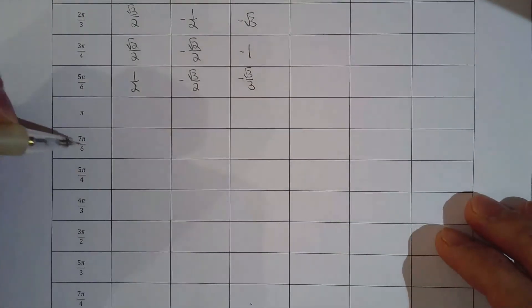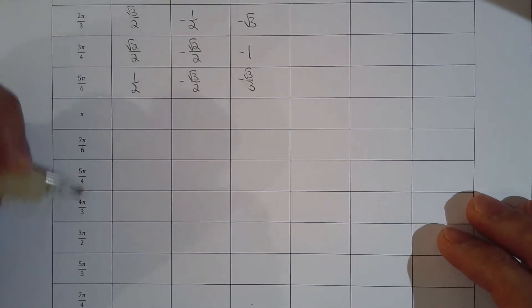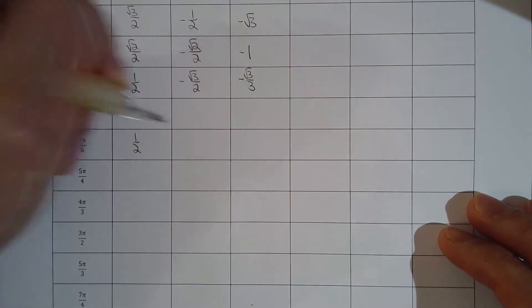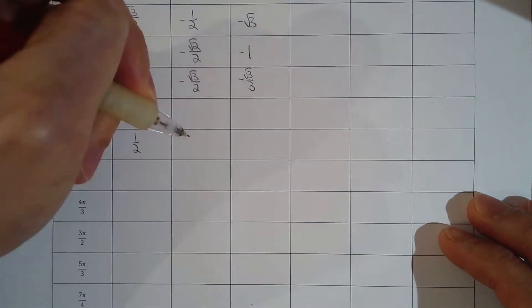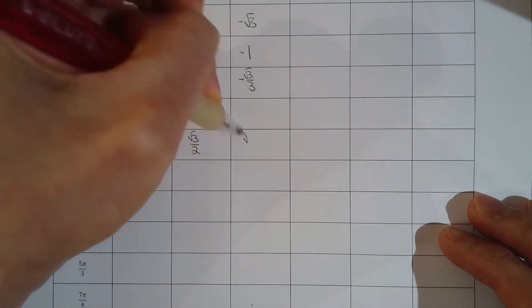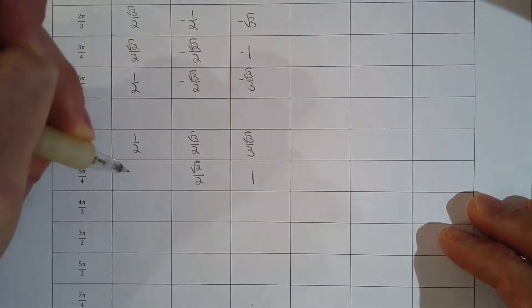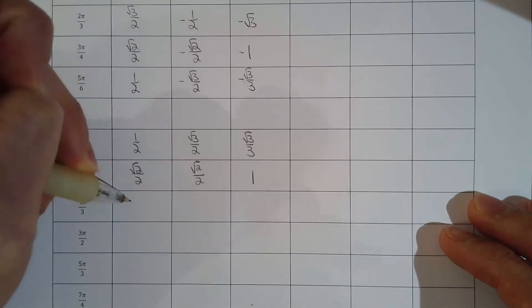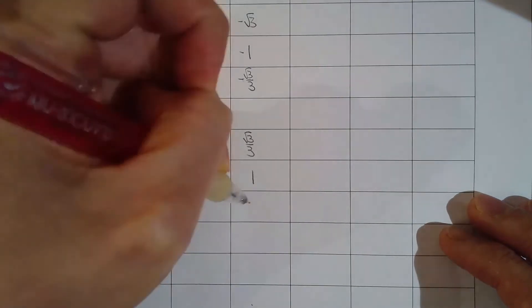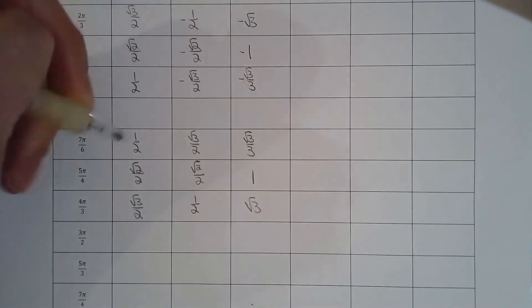Now let's work with 7π/6, 5π/4, and 4π/3. These are in the third quadrant. I will still copy the magnitudes of the ratios — forget the signs, just copy the magnitude. Now I have to fill in the signs. In the third quadrant, sine and cosine are negative, and of course tan is positive.